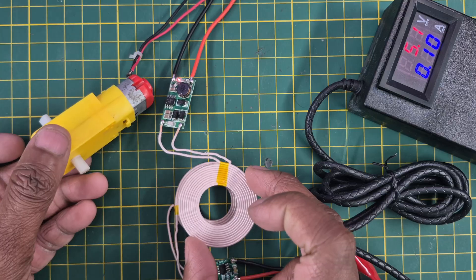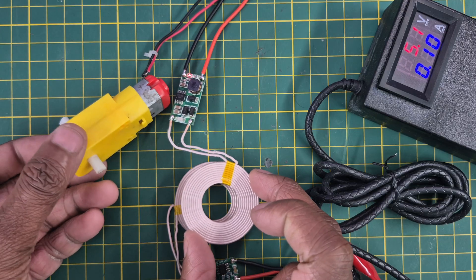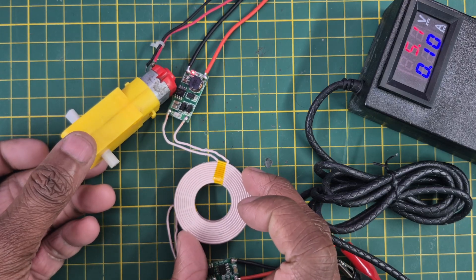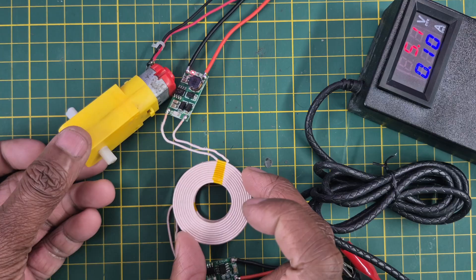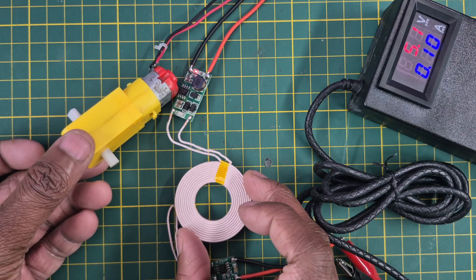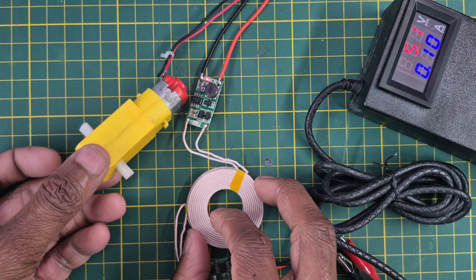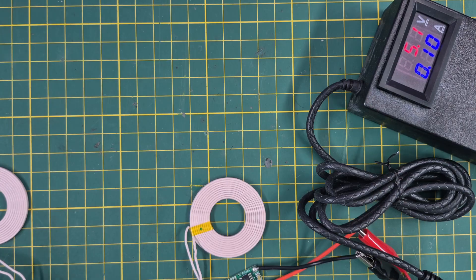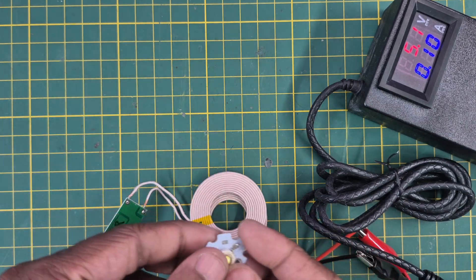We can see if I am lifting the coil, the current is decreasing, but if I am touching or taking this receiver coil closer to the transmitter, the motor speed is increasing. I will connect an LED to this and we will see how the LED is working.